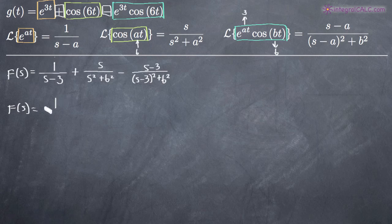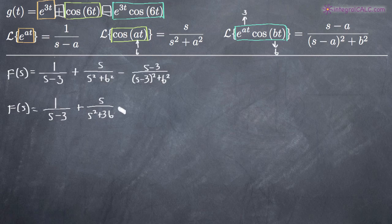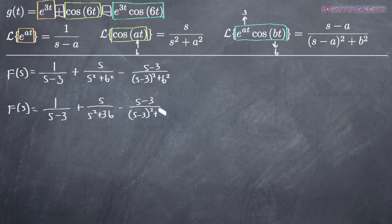You don't have to and you probably shouldn't combine these fractions into one. So we'll go ahead and leave them separate. We'll say 1 over s minus 3 plus s over s squared plus 36 minus s minus 3 divided by the quantity s minus 3 squared plus 36. So we'll just multiply those out. The 6 squared will evaluate that. But other than that, we'll leave the function as it is.